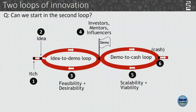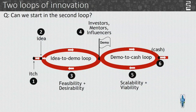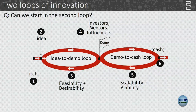We looked at the two loops of innovation and applied it to the Dunzo example. The first loop was idea to demo — for Dunzo, he just used WhatsApp, so idea to demo was no big deal. There was no major technology to develop — just one WhatsApp group per customer.